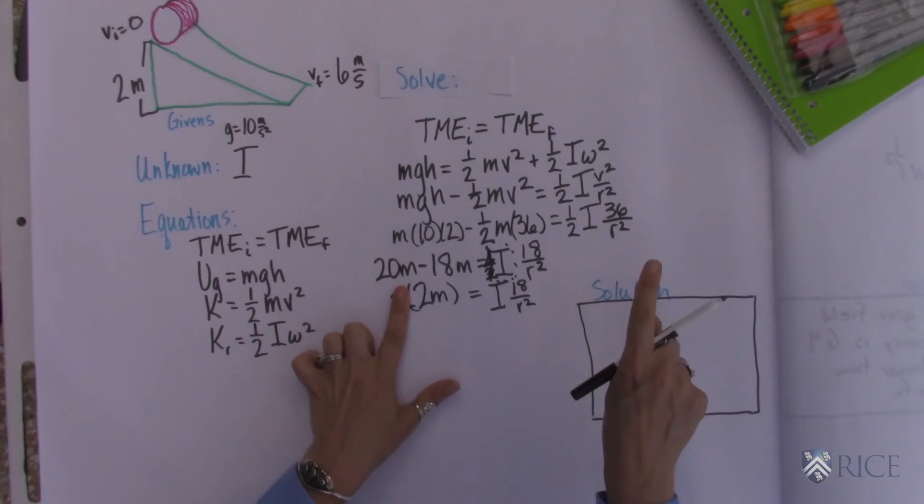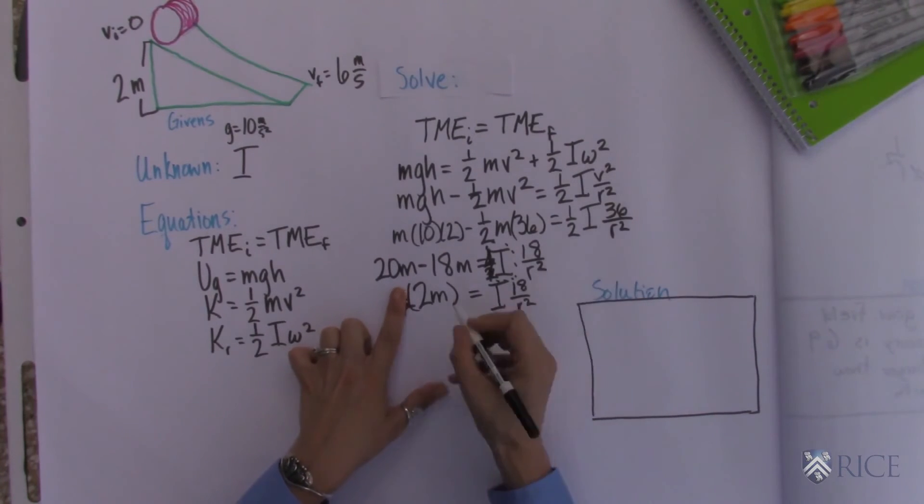Simplify this and you get, you divide both sides by 18. You get that this is 1 ninth times m and then you multiply both sides by r squared.